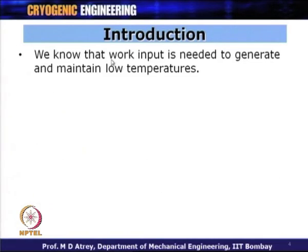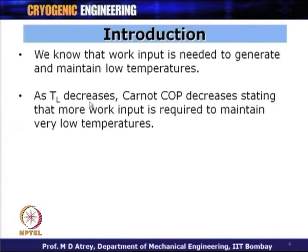We have seen that work input is needed to generate and maintain low temperatures. The first and second laws tell us we have to put in some work in order to generate and maintain low temperature. As TL decreases — as we want to reach lower and lower temperatures — the Carnot COP decreases, stating that more work input is required to maintain very low temperature.